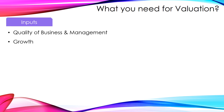The second input is growth, which has two facets. First, growth rate — this depends on the size of the opportunity and the ability of management to exploit this opportunity and scale up their business. Second, growth period — this is the number of years the growth rate can be sustained. To determine this, a fair understanding of the industry in which the company operates is needed. This is where the circle of competence comes into play, helping us reflect on whether we understand the industry and company well.